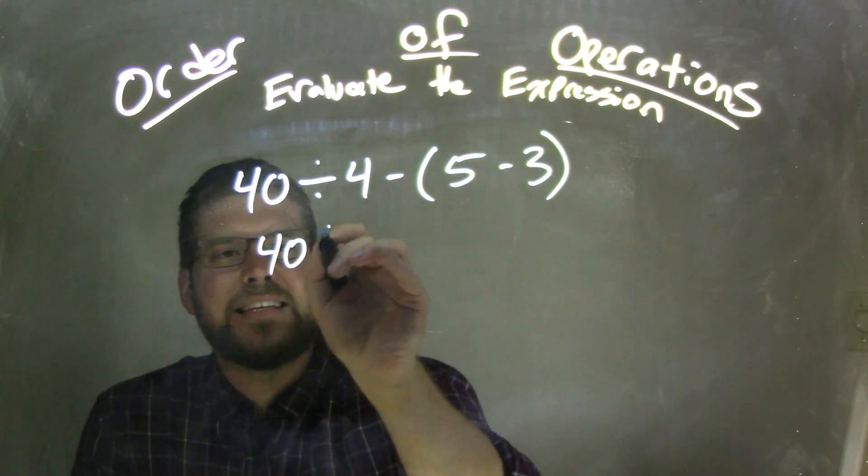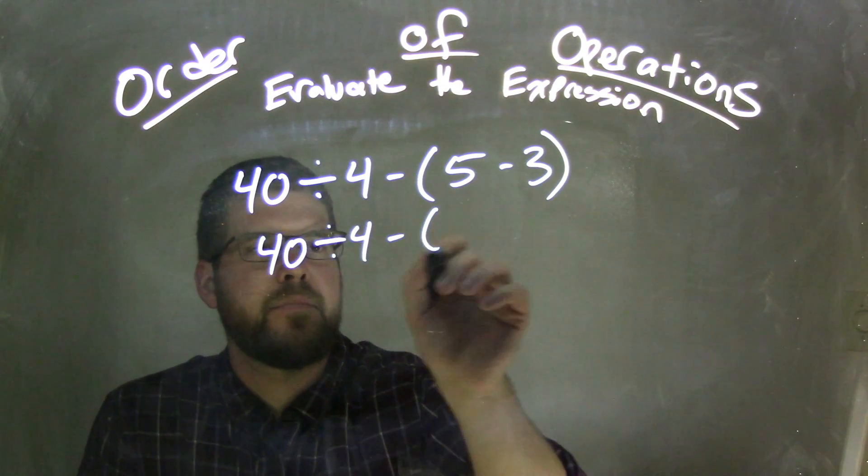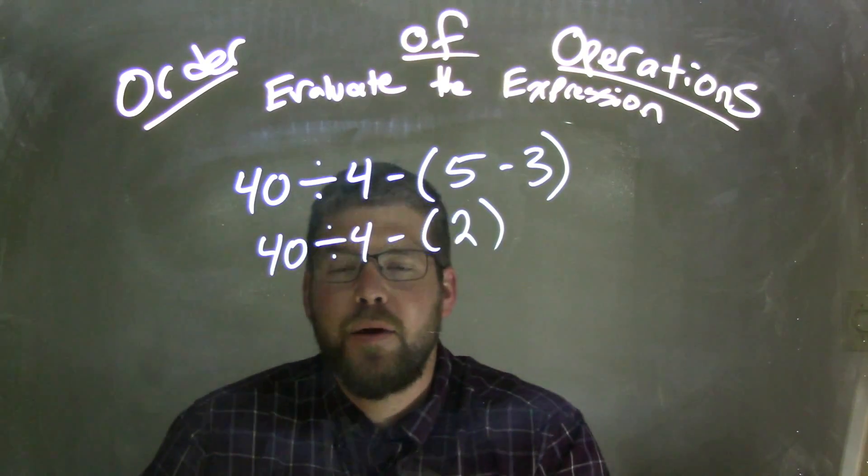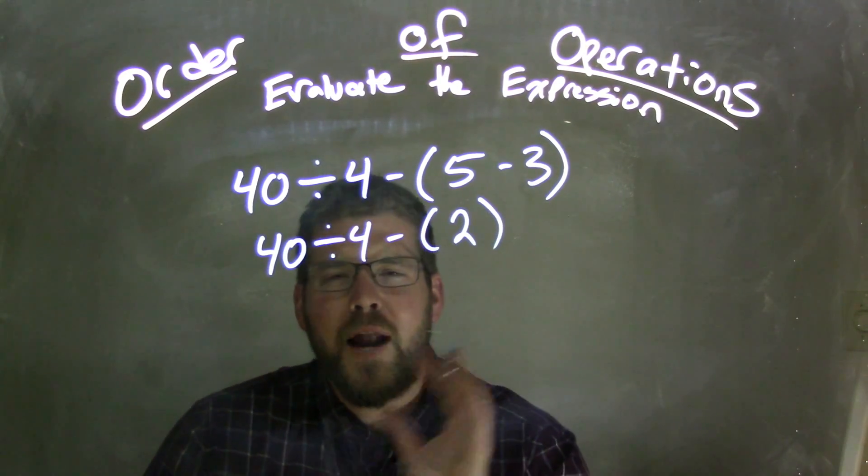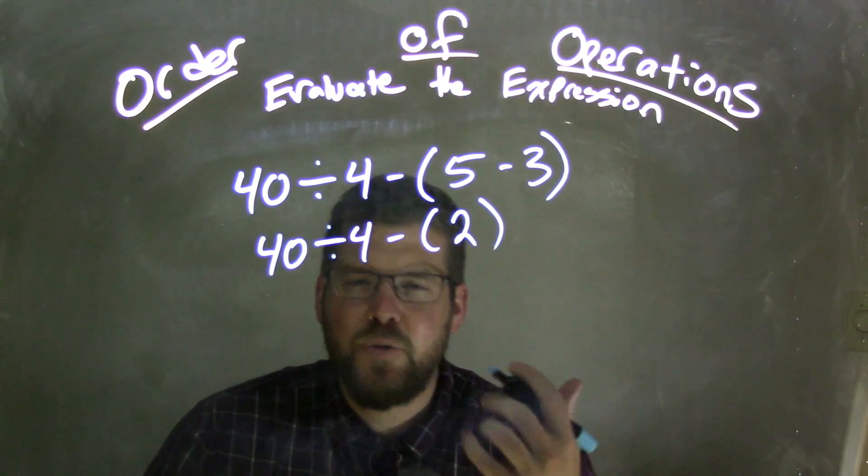So I'm going to rewrite everything. Take your time. And now we have 40 divided by 4 minus 2. And so now we have to ask ourselves, okay, what operations do we have left? It's getting trickier here.